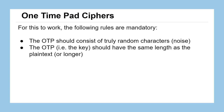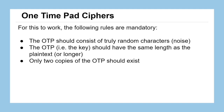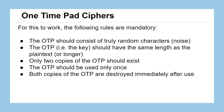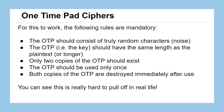For a one-time pad to work, you must follow these rules: the key should consist of truly random characters; the key must have the same length as the plain text; there should only be two copies of the one-time pad — just for you and the receiver; and you should use the key one and only one time. All these restrictions make this really hard to pull off in real life — it requires a lot of planning and meeting ahead of time.